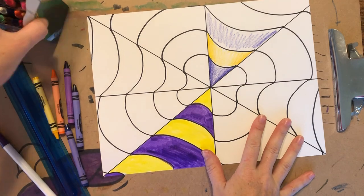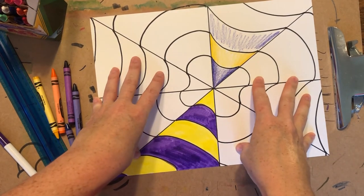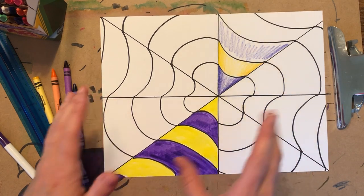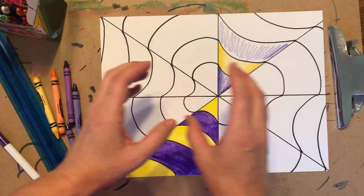Okay, so that is going to be our first step of our Bridget Riley. Again, you would be filling in this whole piece with color, and then I'm going to show you the next step for what we're going to add on top.